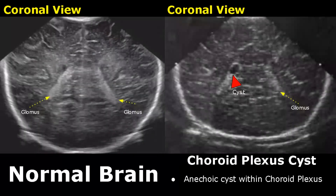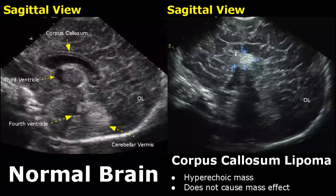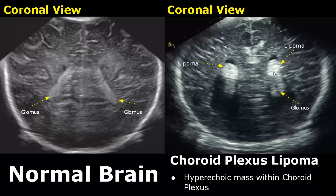A choroid plexus cyst will appear as an anechoic fluid collection inside the choroid plexus. A corpus callosum lipoma will appear as a hyperechoic mass at the interhemispheric fissure — this mass usually does not cause mass effect. Similarly, a choroid plexus lipoma may also occur, appearing as a hyperechoic mass at the choroid plexus.